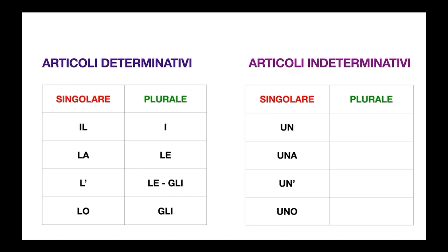Articoli indeterminativi singolari are one of the most important articles. Masculine: un uomo — a man. Feminine: una donna — a woman. This is the meaning in the language.